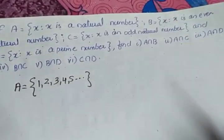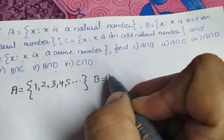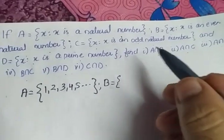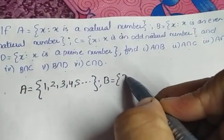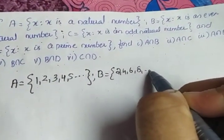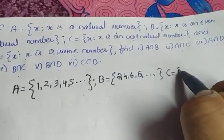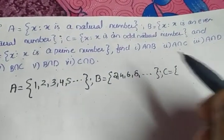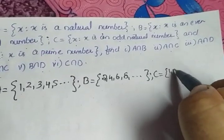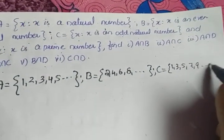Set B: X is an even natural number, so the set will be {2, 4, 6, 8, ...}. Set C: X is an odd natural number, so it is {1, 3, 5, 7, 9, ...}.